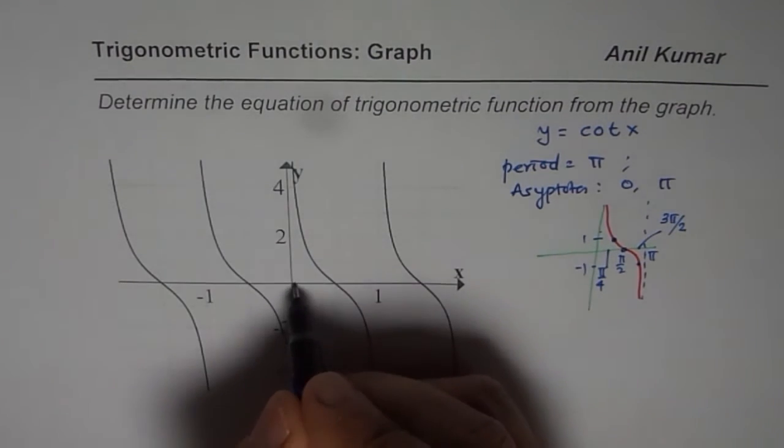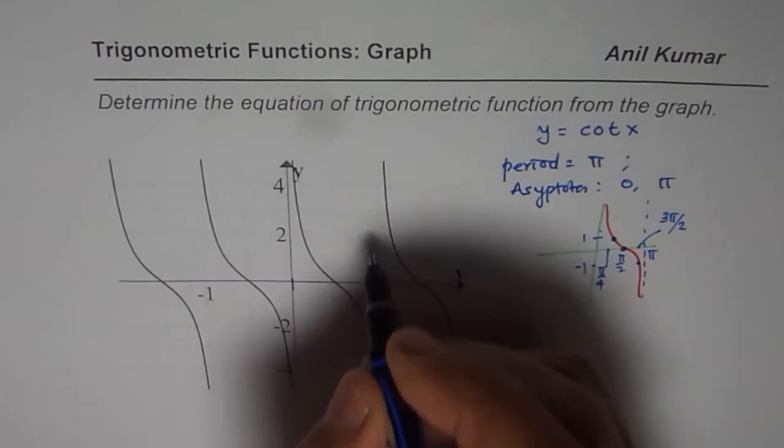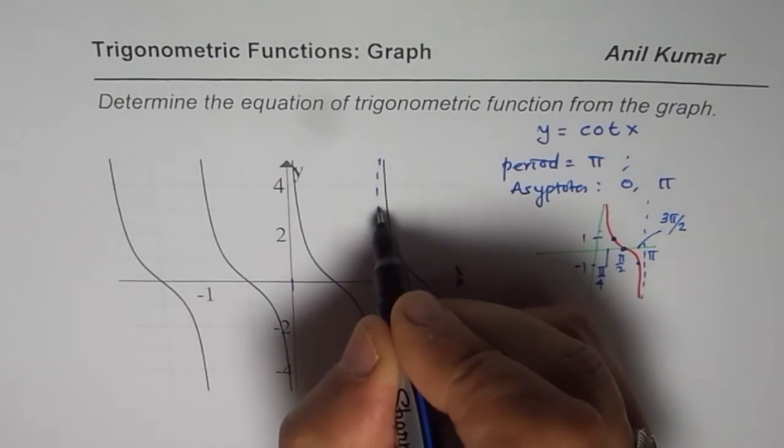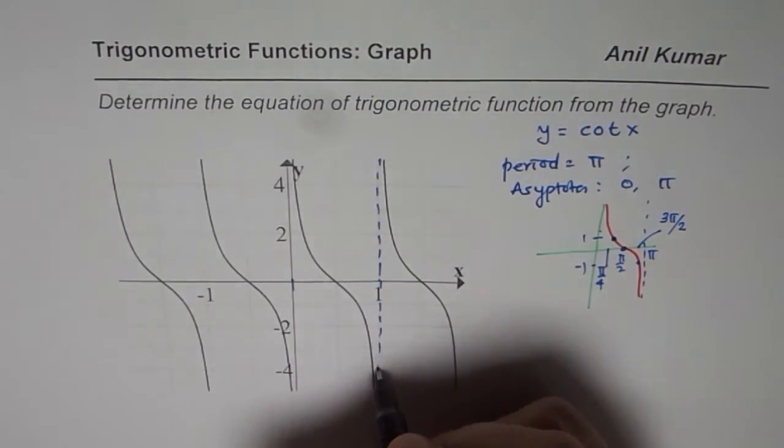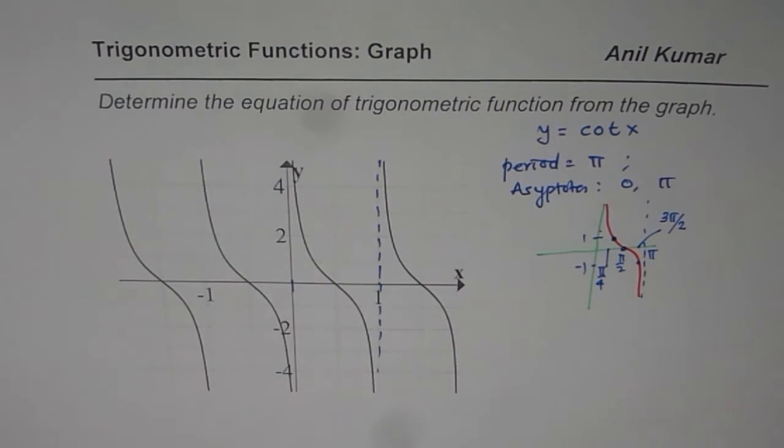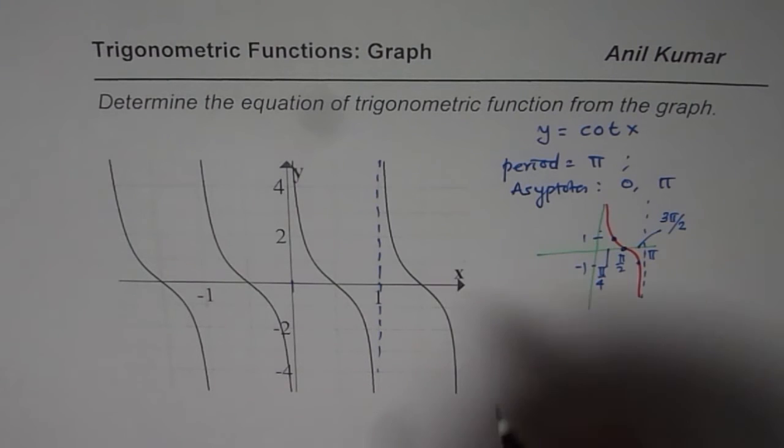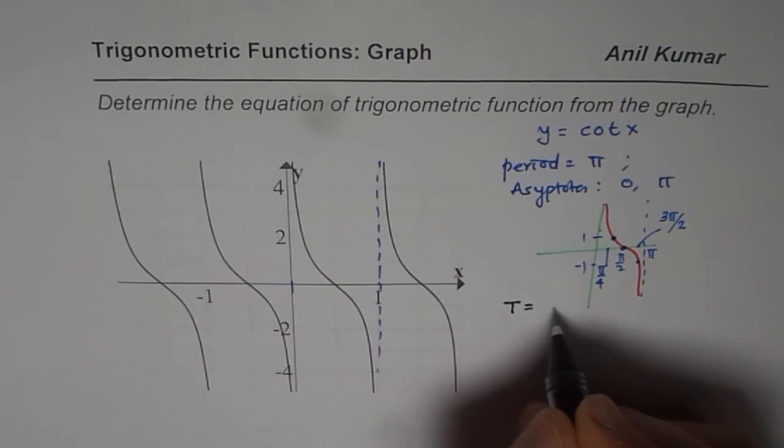So what we have here is the vertical asymptotes are at 0 and 1. So therefore, the time period for the given function is 1 for us. So for this function, we can write that time period T equals 1.